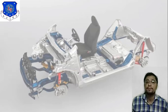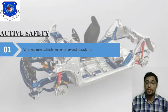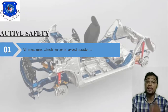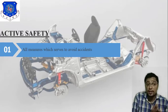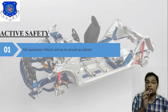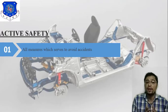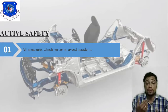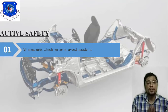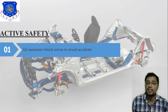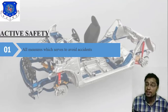The first one is active safety. What is active safety in a four-wheeler or car? The basic definition: all measures which serve to avoid the accident. We need to upgrade our technology and change our methods so that we reduce accidents. So active safety concerns all measures which serve to avoid the accident.